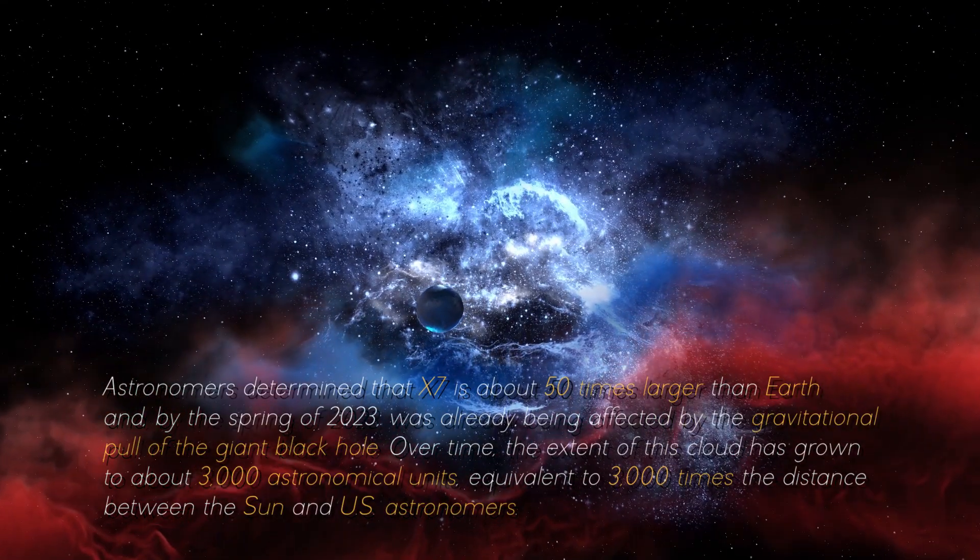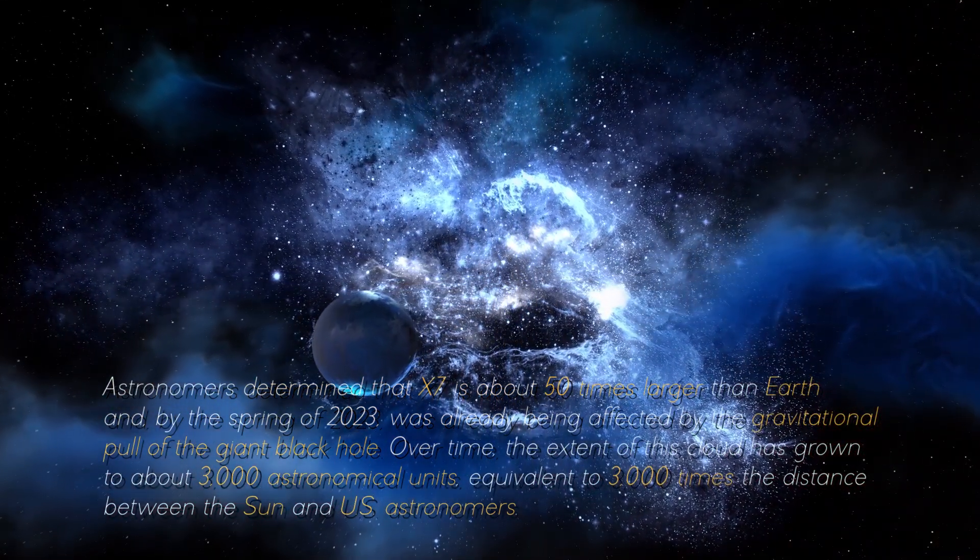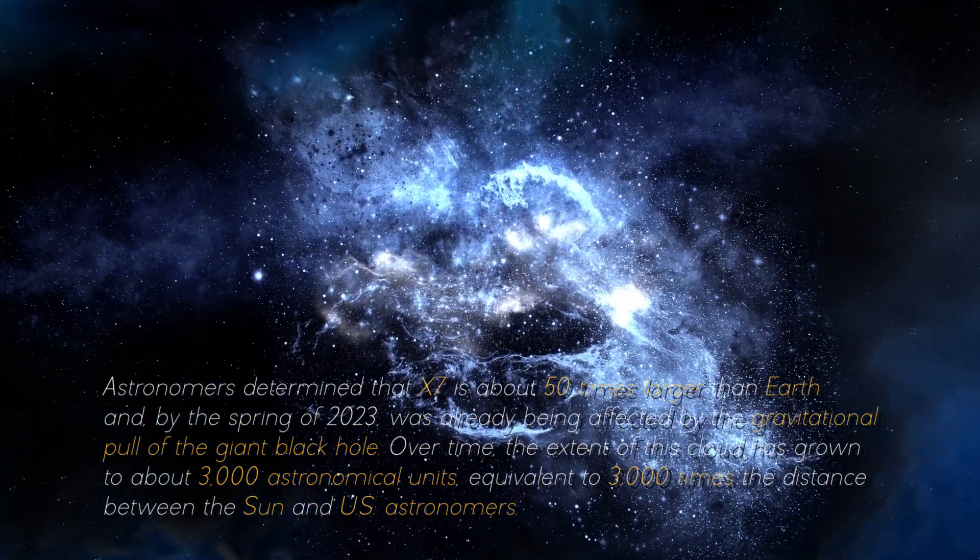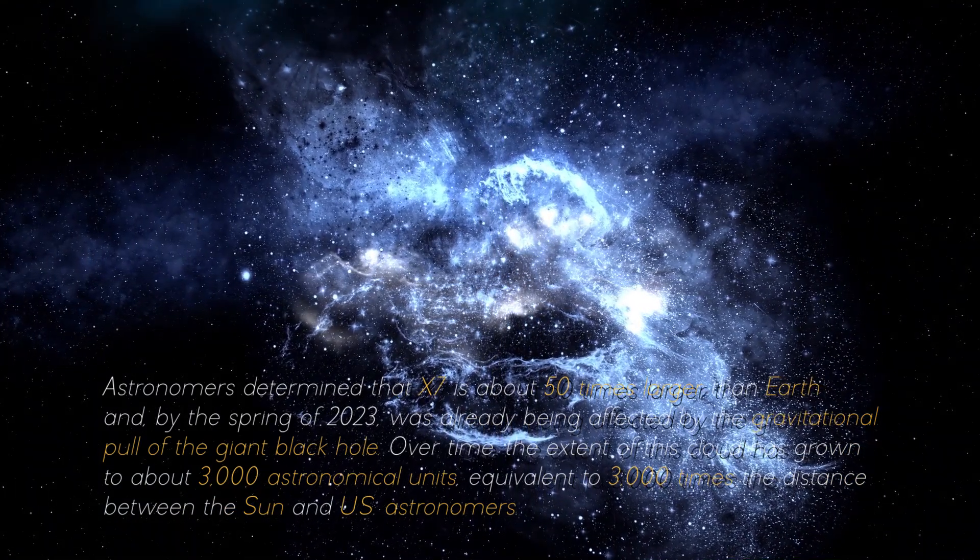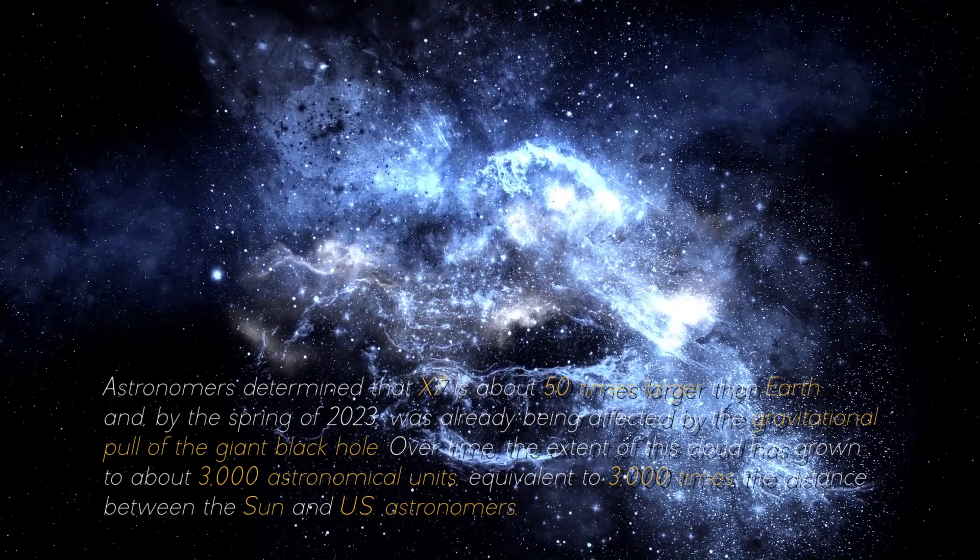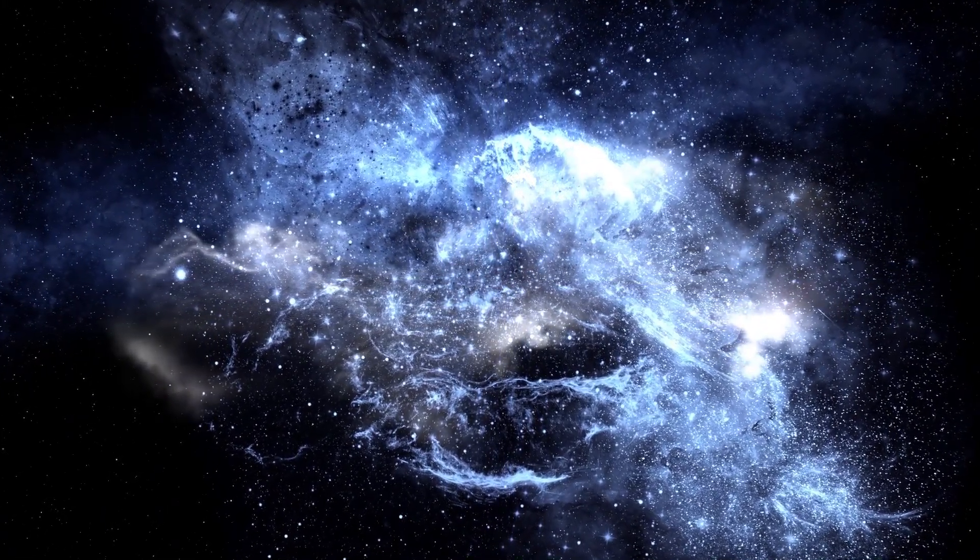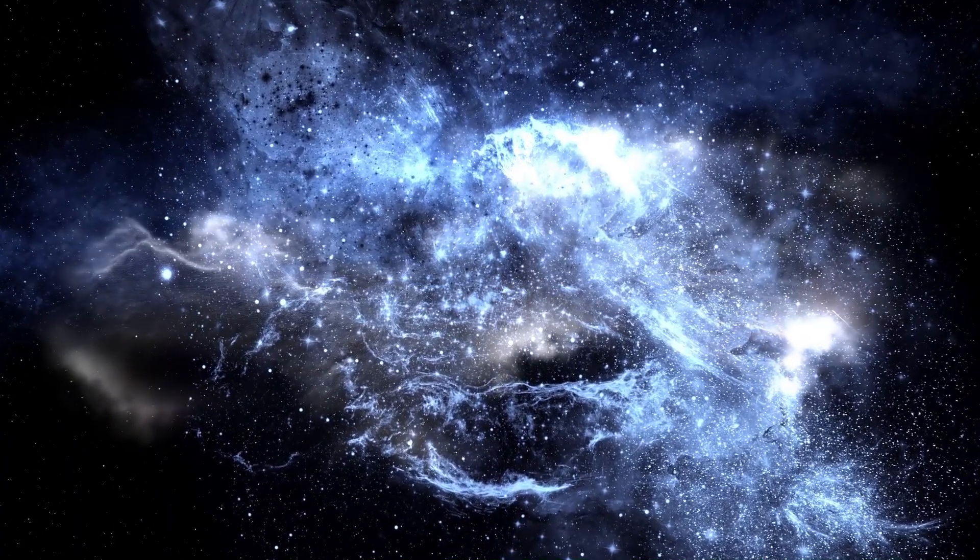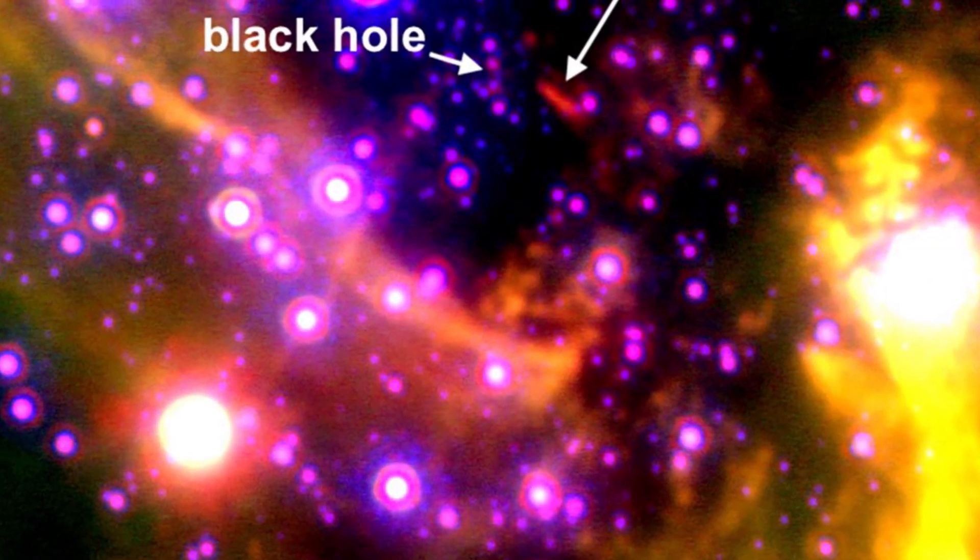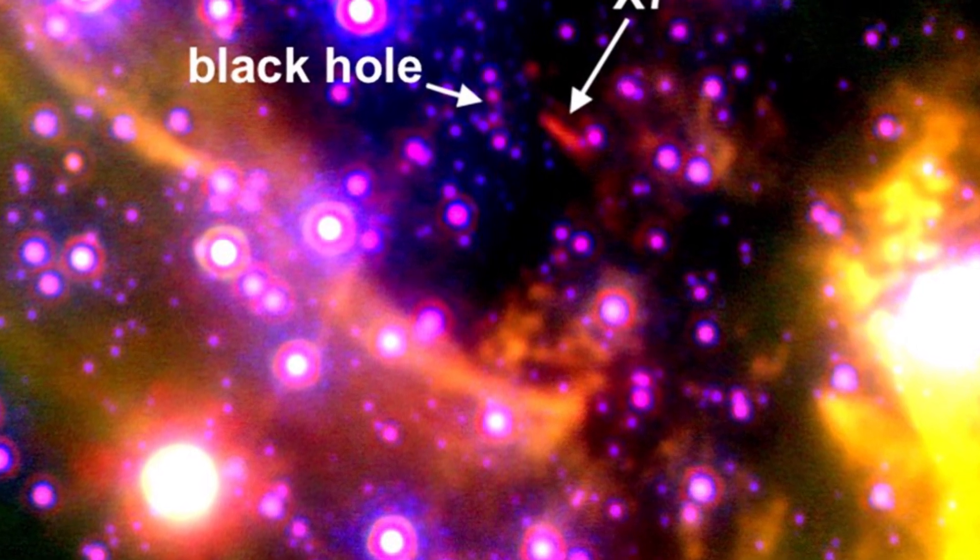Astronomers determined that X7 is about 50 times larger than Earth, and by the spring of 2023 was already being affected by the gravitational pull of the giant black hole. Over time, the extent of this cloud has grown to about 3000 astronomical units, equivalent to 3000 times the distance between the Sun and Earth. For a while, scientists wondered about the origin of X7, since a cloud of such magnitude turned out to be a very rare object. The most likely theory suggests that X7 may be the remnant of an ancient stellar collision and now is on course for the Milky Way's central black hole.